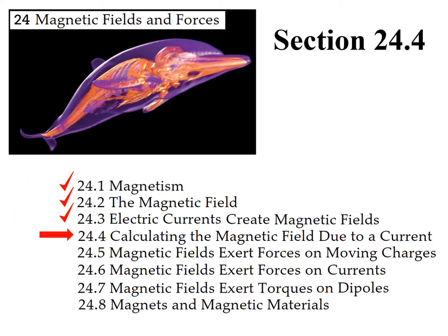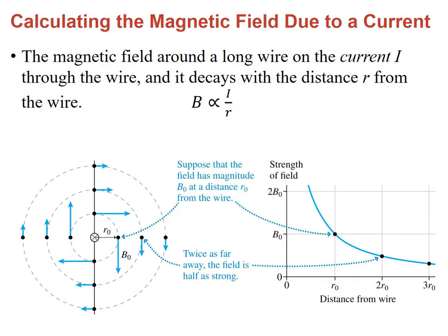This lecture corresponds to section 24.4, calculating the magnetic field due to a current. We have seen that wires can produce a magnetic field. This magnetic field, however, gets weaker and weaker as we move away from the wire. This picture here represents a wire — the X meaning that the current is going into the page — and as one moves away, the field that it produces gets smaller and smaller.